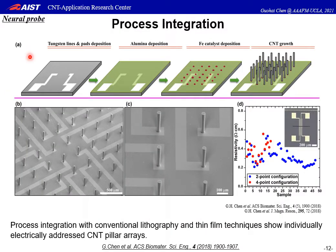This successful fast-scan cyclic voltammetry demonstrates the capability of our CNT pillars being used as neural probes. To apply our CNT pillars to microelectrode array devices, it is necessary to evaluate the possibility of using microfabrication processes to create electrical connections that can individually address the probes. To do so, the CNT pillars were grown on patterned tungsten lines using process integration with conventional lithography and thin-film processes.